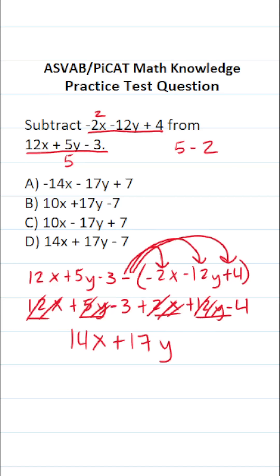Then we have negative 3 and negative 4. Negative 3 plus negative 4 is going to be negative 7, and let's cross them out. So this one is going to be 14x plus 17y minus 7, which is answer choice D.